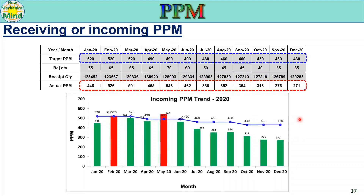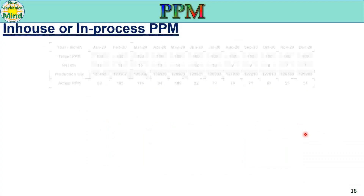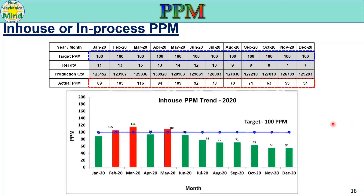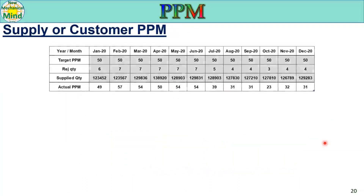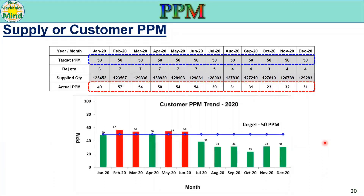In some companies, a step-down target is provided to improve quality progressively. For in-house or in-process PPM, the target is the same for the entire year; actual PPM is calculated using rejection and production quantities, and the trend is prepared similarly. A step-down target can also be applied to in-house PPM trends. For supplier or customer PPM, the PPM is calculated from customer-reported rejections, and the trend is prepared accordingly.